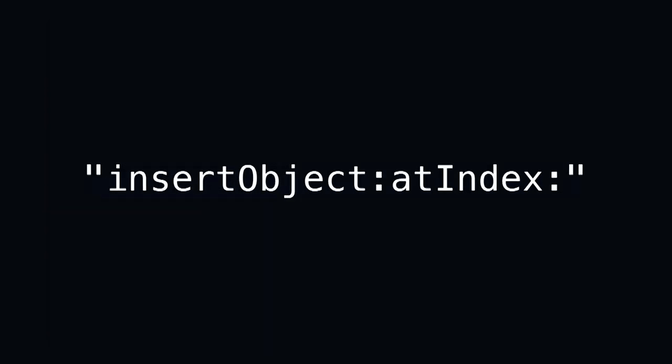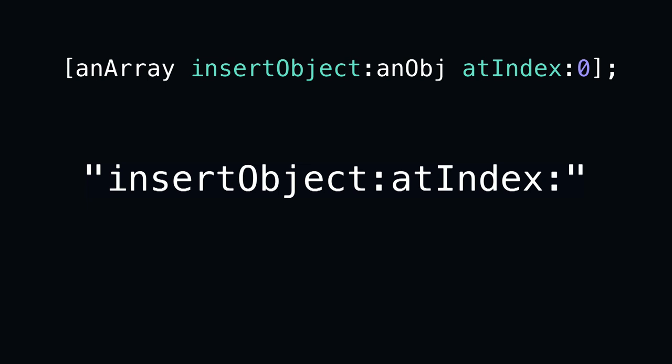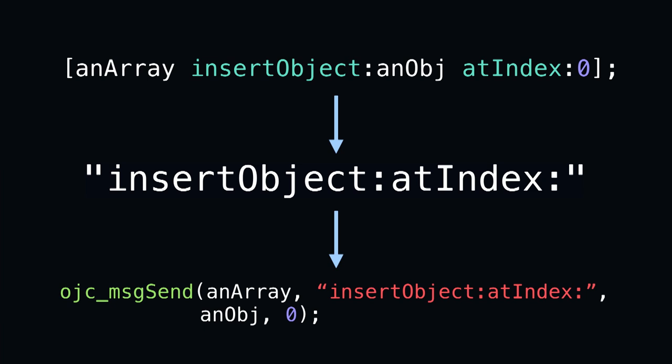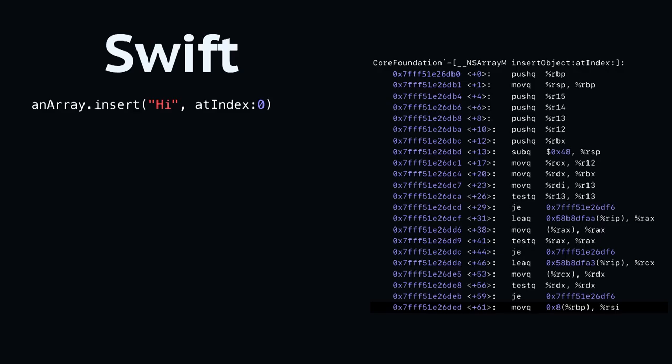Looking at a particular example — a call to probably NSArray — this is Objective-C code that the compiler takes, derives the method selector from, and translates into a plain C call to objc_msgSend. Swift tends to aim for static dispatch, meaning it knows at compile time where the implementation of a function is — effectively baking the memory address into your app.